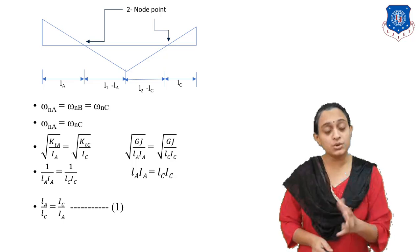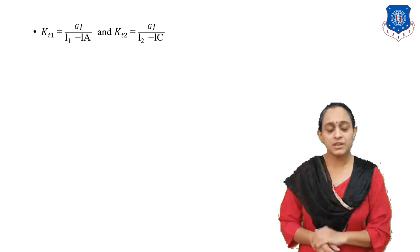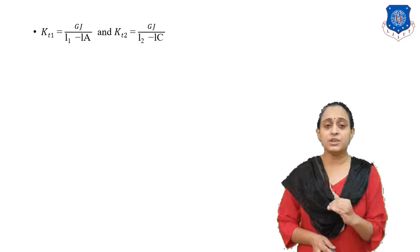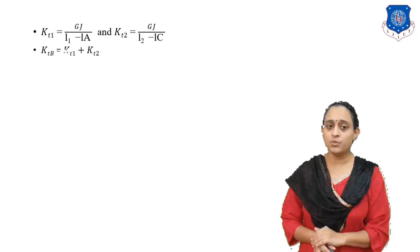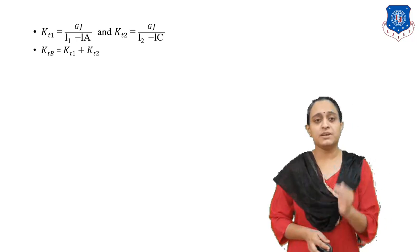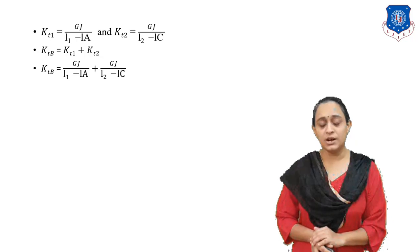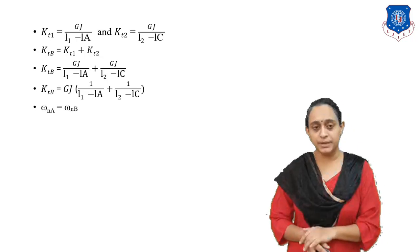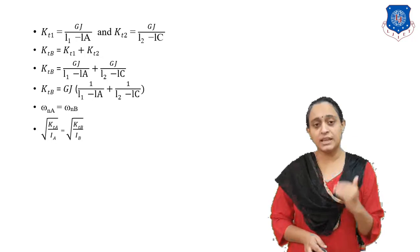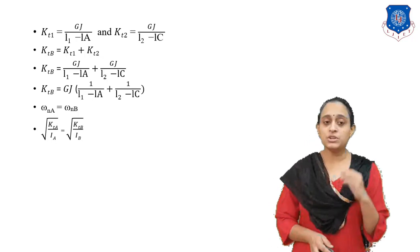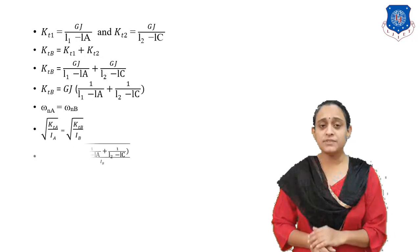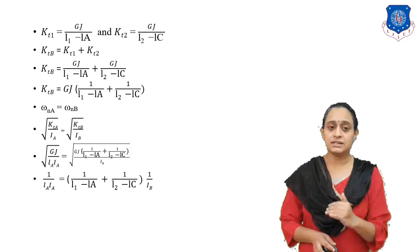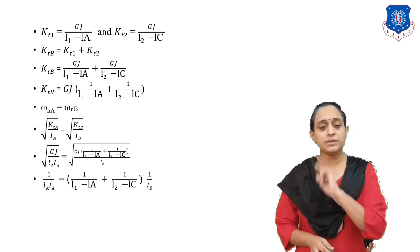For rotor B we consider KT1 equals GJ upon (L1 minus L_A) and KT2 equals GJ upon (L2 minus L_C). Comparing these, KT_B equals KT1 plus KT2. So KT_B equals GJ upon (L1 minus L_A) plus GJ upon (L2 minus L_C). Comparing omega_A with omega_B gives: under root of KT upon I_A equals under root of KT upon I_B. Putting the values of KT_A and KT_B we finally get: 1 upon L_A I_A equals [1 upon (L1 minus L_A) plus 1 upon (L2 minus L_C)] times 1 by I_B. This is the two node position equation.